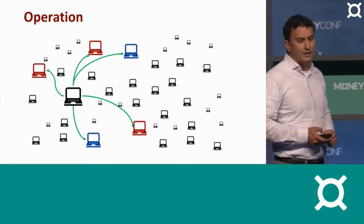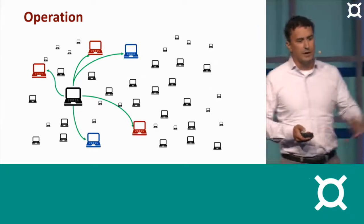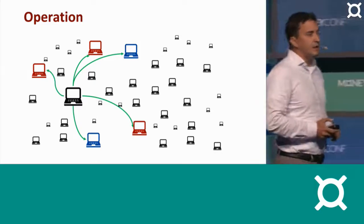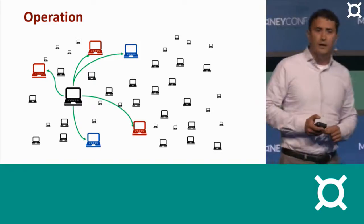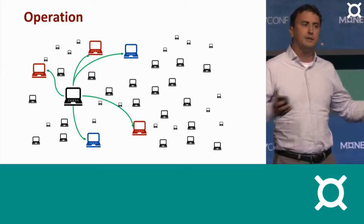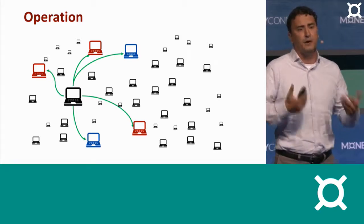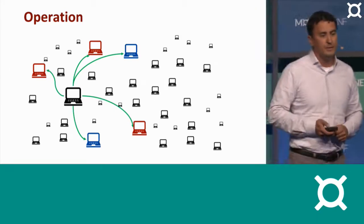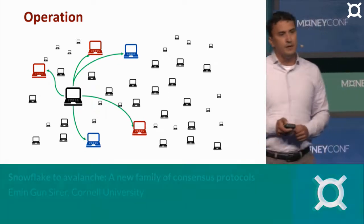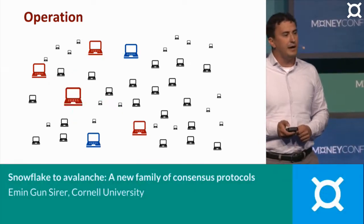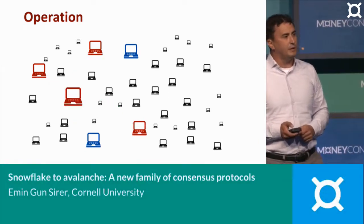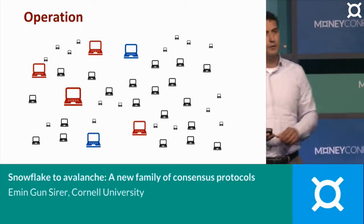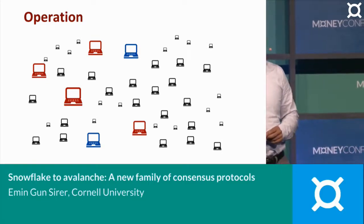And these nodes then will respond. They can say red, red, blue, red, blue. When we see this, we go: okay, it looks like the entire stadium is tilting towards red, at least from my own perspective, based on one round of polling. And so what I'm going to do now is simply add my weight to what I perceive to be the heavier weight. So I'll throw my weight behind the red after this poll.